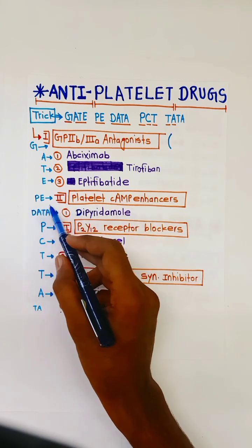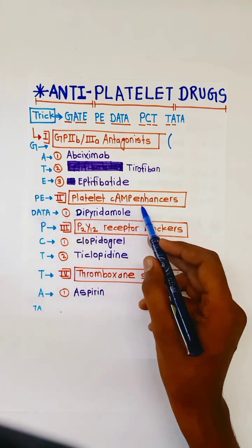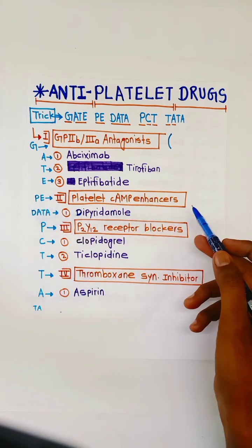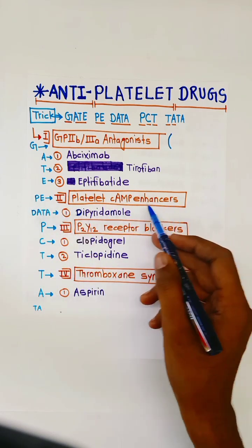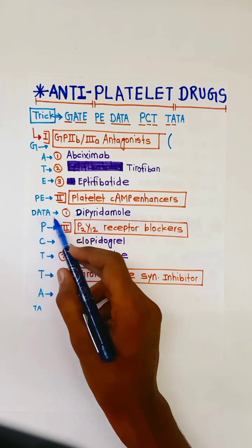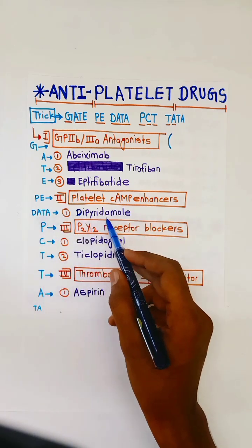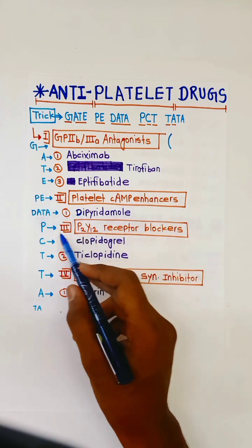PE for platelet cyclic AMP enhancers — in this only one drug, D for Dipyridamole.